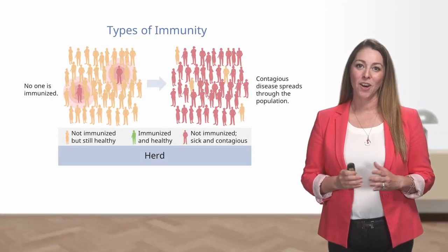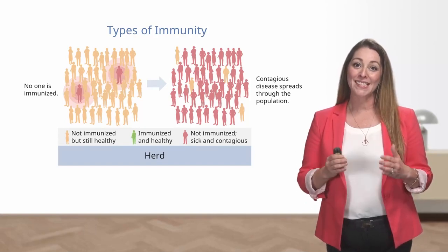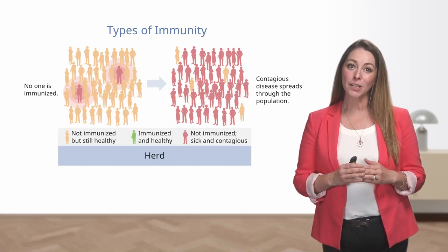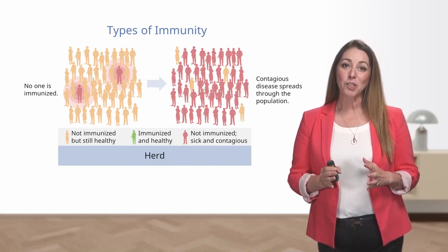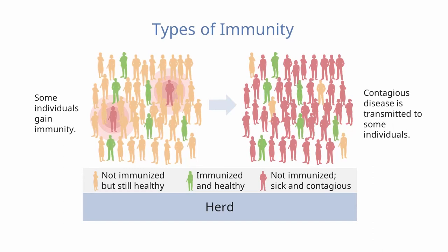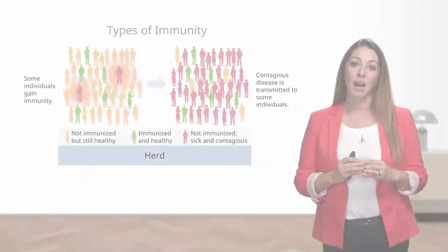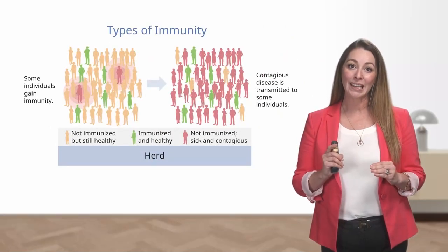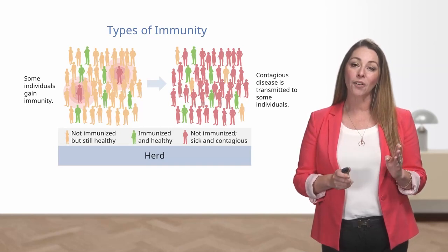Then we have herd immunity, also sometimes called community immunity. This is the level of immunity required to resist a particular disease in a specific population. In this image, the peach population represents those who are non-immunized but still healthy, and the red represents those who are non-immunized, sick, and contagious. If herd immunity is low — meaning that few people in the community are immune — spread of disease is more likely. Even just a few cases of infection in the community can result in high levels of community infection. Those who are immunized and healthy, the green population, remain healthy and not contagious.